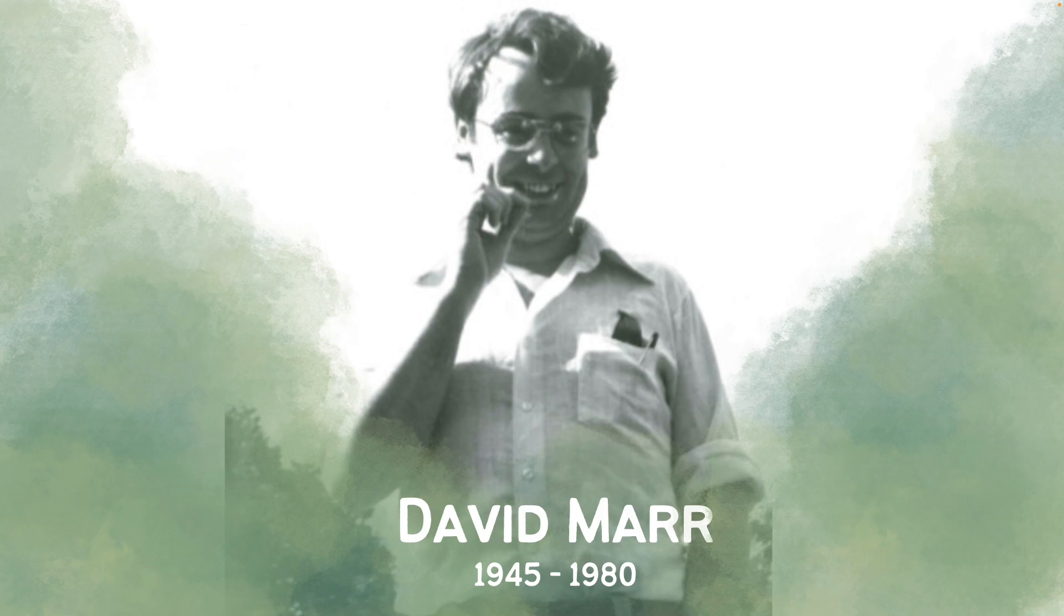David Marr was a British neuroscientist who was one of the pioneers in the development of the field of computational neuroscience. He was famously known for the development of the computational theory of human vision, in which he described the visual system as a set of algorithms that tend to reconstruct one's physical environment from the information received and stored in the photoreceptors.